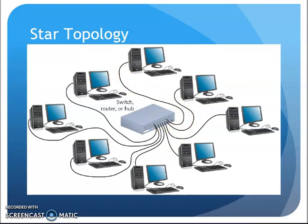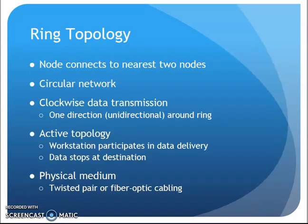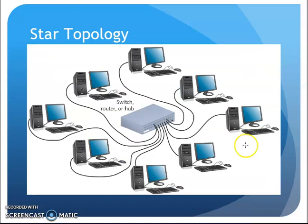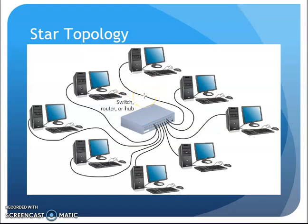The star topology added some advantages over the bus. In the bus topology, everybody is connected into that central coax with nothing acting as a traffic controller — a problem with one computer could literally affect the whole network. In the star topology, each device has an individual cable coming into the hub, so if this computer has a problem with its cable, it only affects that one computer. It's not a ring where devices pass signals port to port anymore.